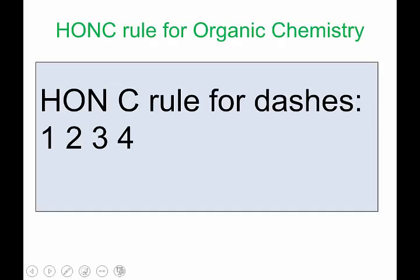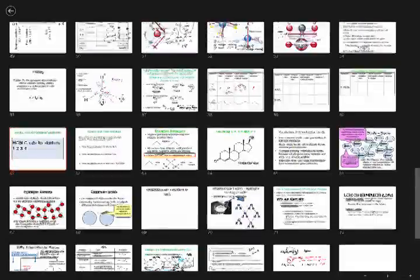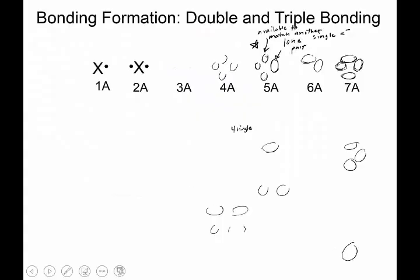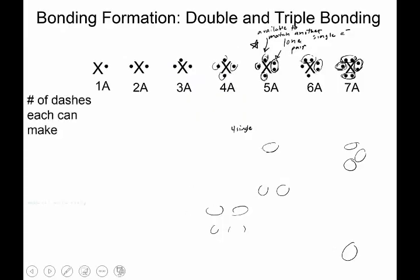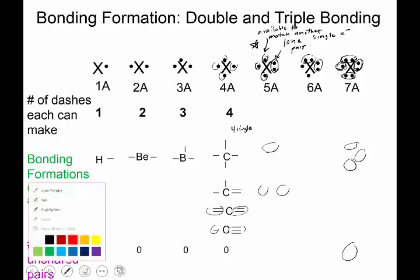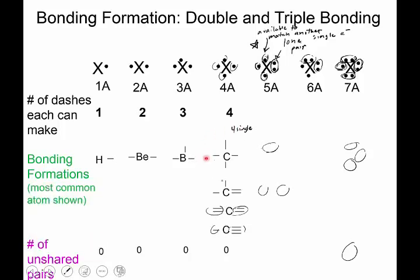Let's take a look at some bonding formations — everyone should have this. Carbon can look like one of these four things: four singles, a double and two singles, two doubles, or a triple and a single. So on your final structure, if carbon has something other than one of these — like it's only making three dashes — then something's probably wrong.